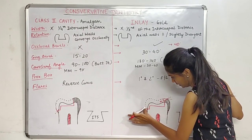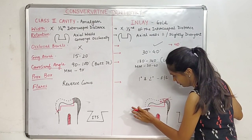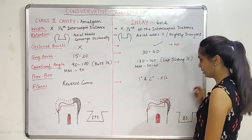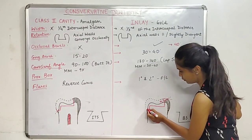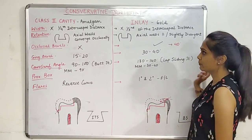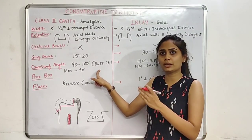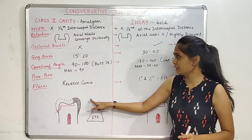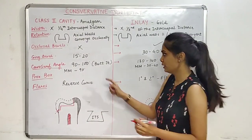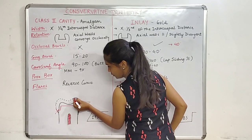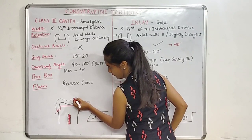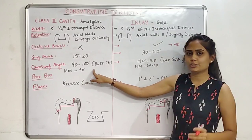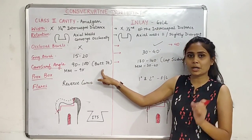Moving on to the cavo-surface angle: for the Class 2 cavity for amalgam it is 90 to 100 degrees — this is known as a butt joint. The restorative material meets the tooth at approximately a right angle at the margin.